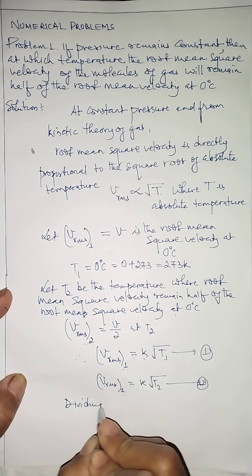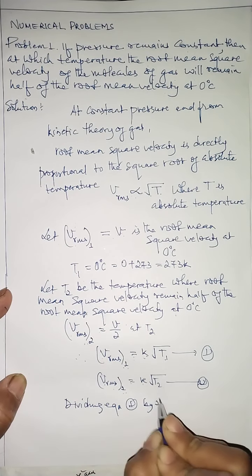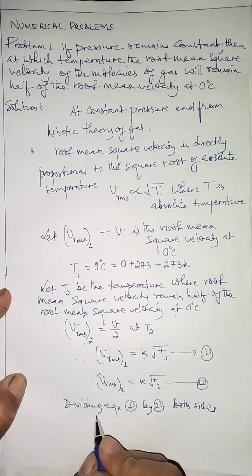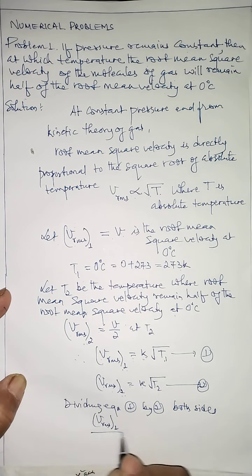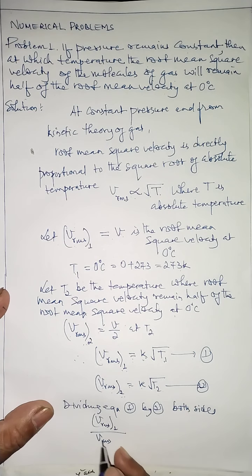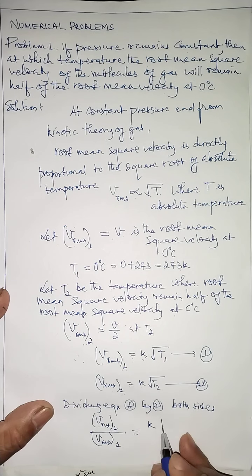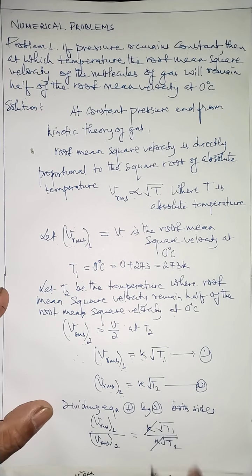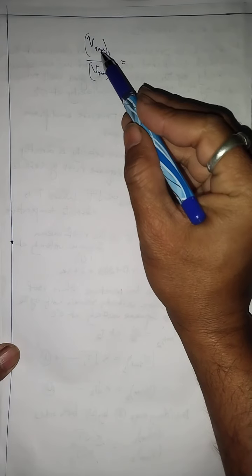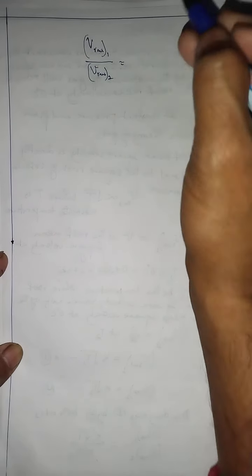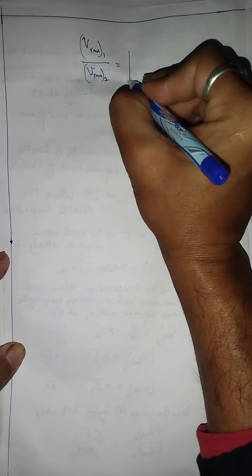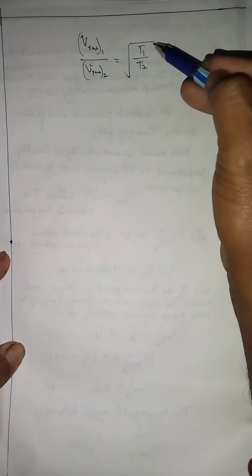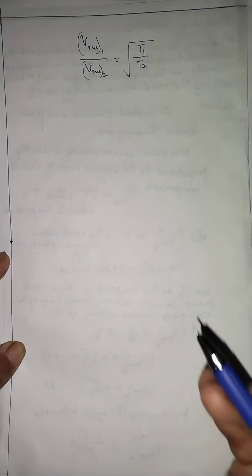Now I divide equation one by equation two on both sides. The left-hand side becomes v_rms1 / v_rms2. The right-hand side becomes k√T1 / k√T2. The constants k and k cancel out, leaving: v_rms1 / v_rms2 = √(T1/T2), since both numerator and denominator are square roots, we can combine them under one square root.